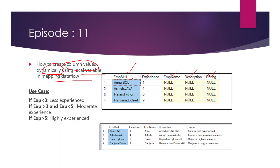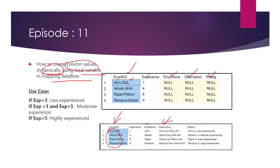All the other columns - employee name, description, and rating - are null. So basically we need to fill these three column values with the help of details present in the first column (employee skill) and the second column (experience). The output should have the employee name coming from the first half of the employee skill value, that is before the colon.